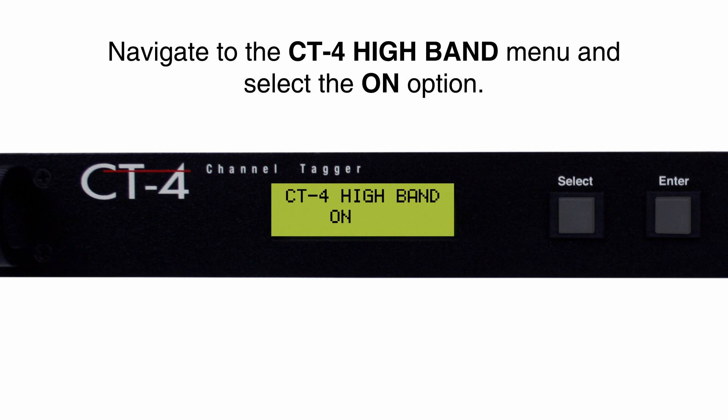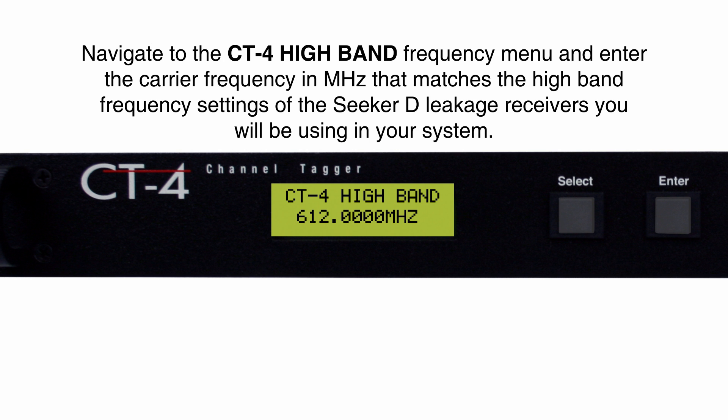In this step, select on if you want to turn the high band carrier on. The high band frequency defaults to 612 MHz. If this is not the desired high band carrier frequency, use the same method described earlier to make the necessary changes.